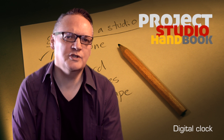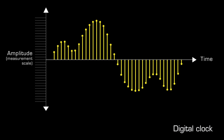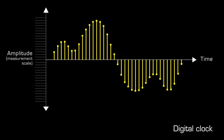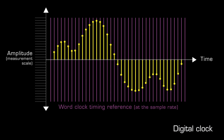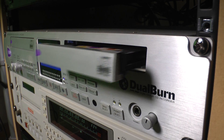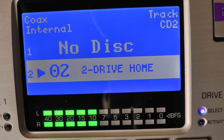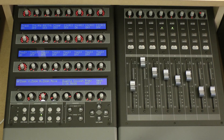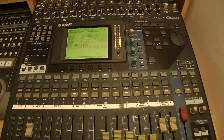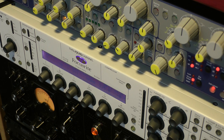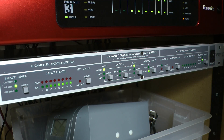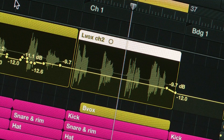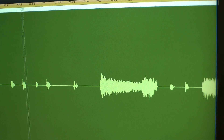Digital audio devices require a super-accurate clock to ensure the precise timing of samples. If they are operating alone, they use their internal clock. But in a network of connected devices, timing errors can occur, which at best cause subtle audible distortion, and at worst produce audible clicks and pops, and even complete dropouts.